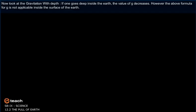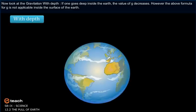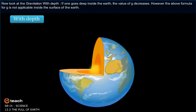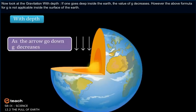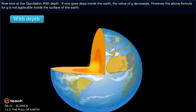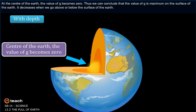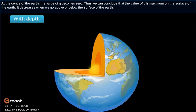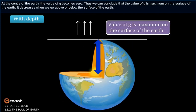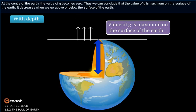If one goes deep inside the Earth, the value of g decreases. However, the formula for g is not applicable inside the surface of the Earth. At the center of the Earth, the value of g becomes zero. Thus, we can conclude that the value of g is maximum on the surface of the Earth; it decreases when we go above or below the surface of the Earth.